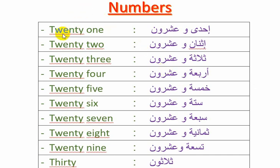إذن أول عدد هو 21 - إحدى وعشرون. 22 - إثنان وعشرون. 23 - ثلاثة وعشرون. 24 - أربعة وعشرون.